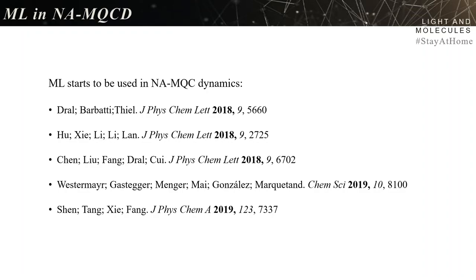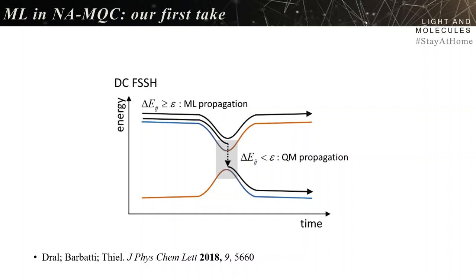Machine learning is starting to be used for non-adiabatic mixed quantum classical dynamics by many groups. Our first implementation was in collaboration with Professor Walter Thiel and Pablo Dral. We developed a simple model zero for machine learning: surface hopping with ML when the gap is large, switching to quantum mechanical propagation when the gap becomes small. Even with this simple model, we saw very nice results.